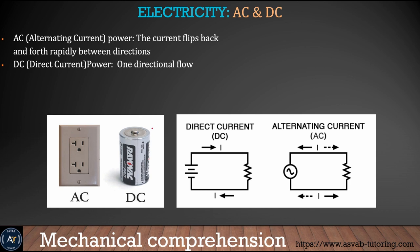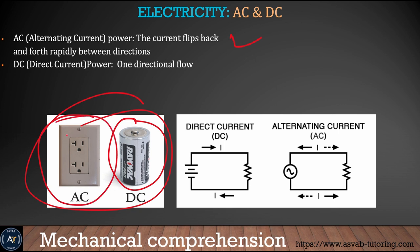AC stands for alternating current — the direction of current changes every cycle. DC is direct current — it flows in a single direction, like in a battery. The current we use at home is alternating current (AC).